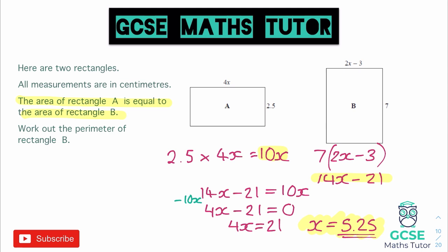Then we added 21 to both sides. And in the final step there, we divided by 4. So they were our steps to solving the equation.